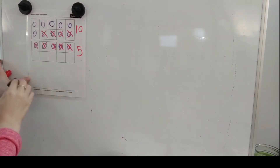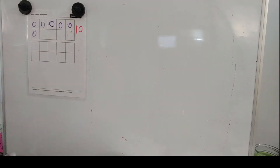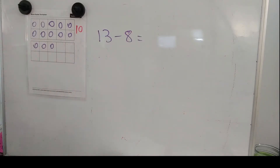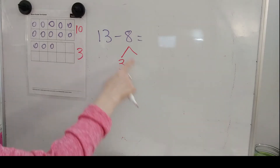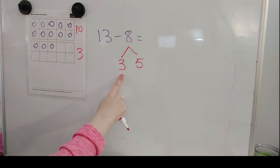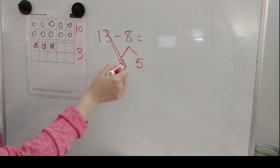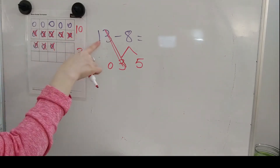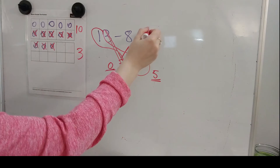Let's look at letter B. Letter B is 13 minus 8. 13 has a 10 and a 3. Inside of the 8, there is a 3. What else is inside of the 8? 3 plus what gives us 8? 5, 6, 7, 8. Now I'm going to take away the 3 first. 1, 2, 3. 3 minus 3 is 0. Now I'm going to take the 5 from the 10. 1, 2, 3, 4, 5. 10 minus 5 is 5. Add those leftovers. 0 plus 5 is 5.